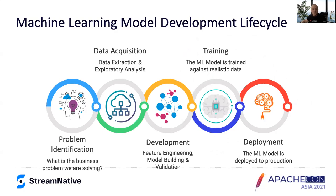As you can see from the slide here, the machine learning model development lifecycle really consists of five separate phases that occur in an iterative process. It begins with problem identification — specifically, what is the business problem we are trying to solve when using this machine learning model? What is the intended goal that we are trying to achieve?